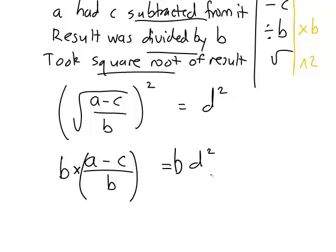And this does indeed have the desired effect because we then get b times a minus c all divided by b, so b divided by b is just 1, meaning the b's cancel leaving us with a minus c equal to bd squared.